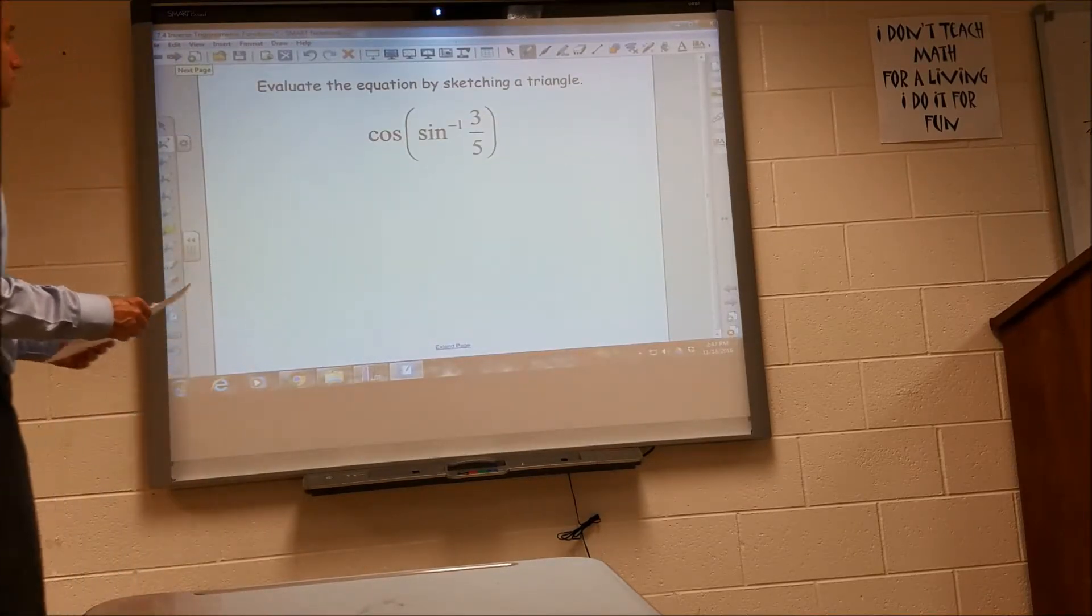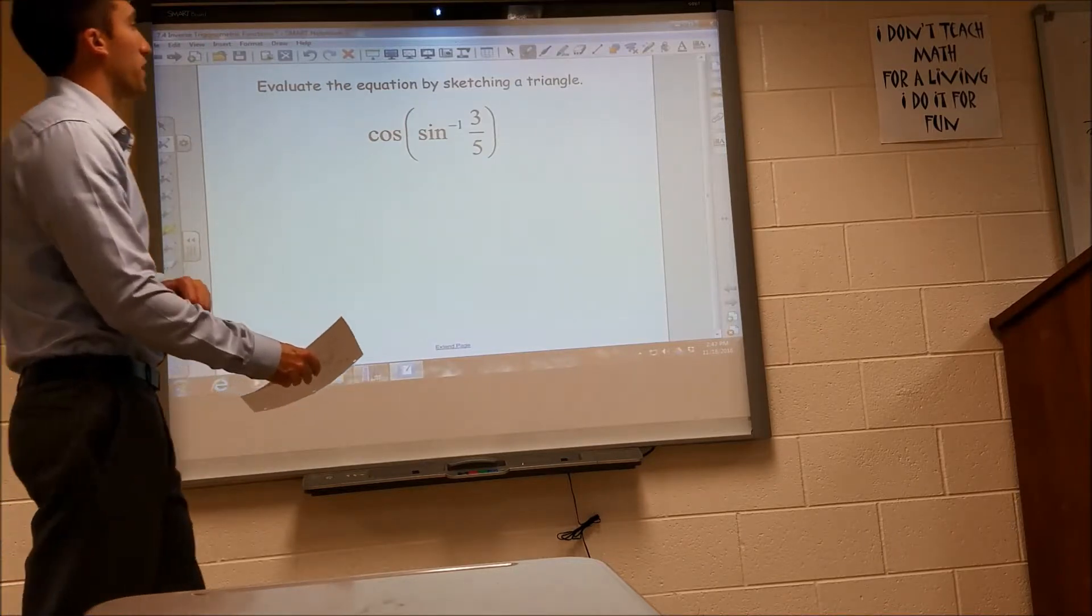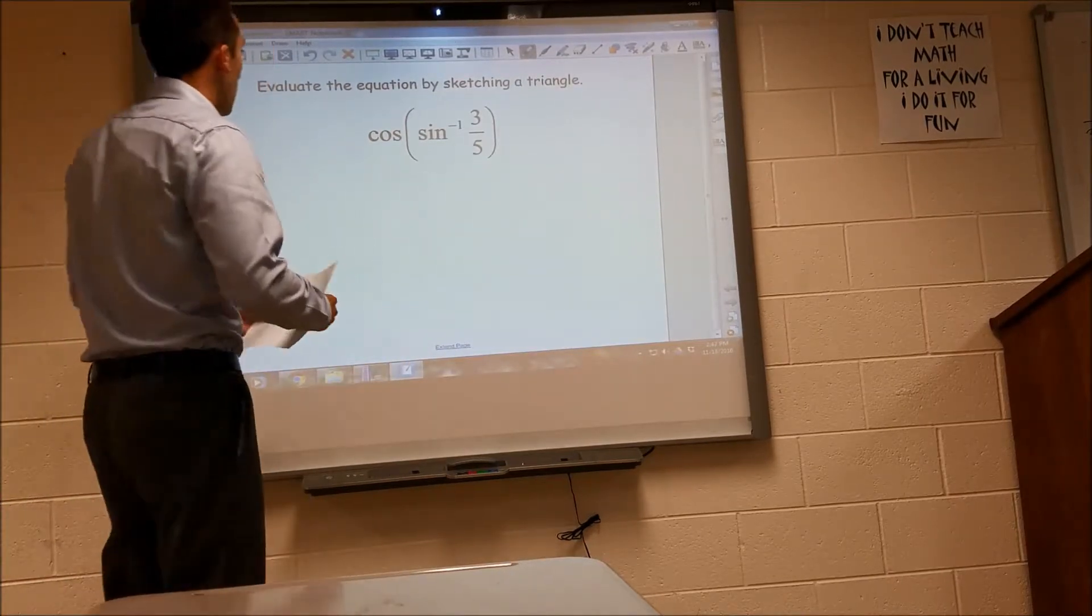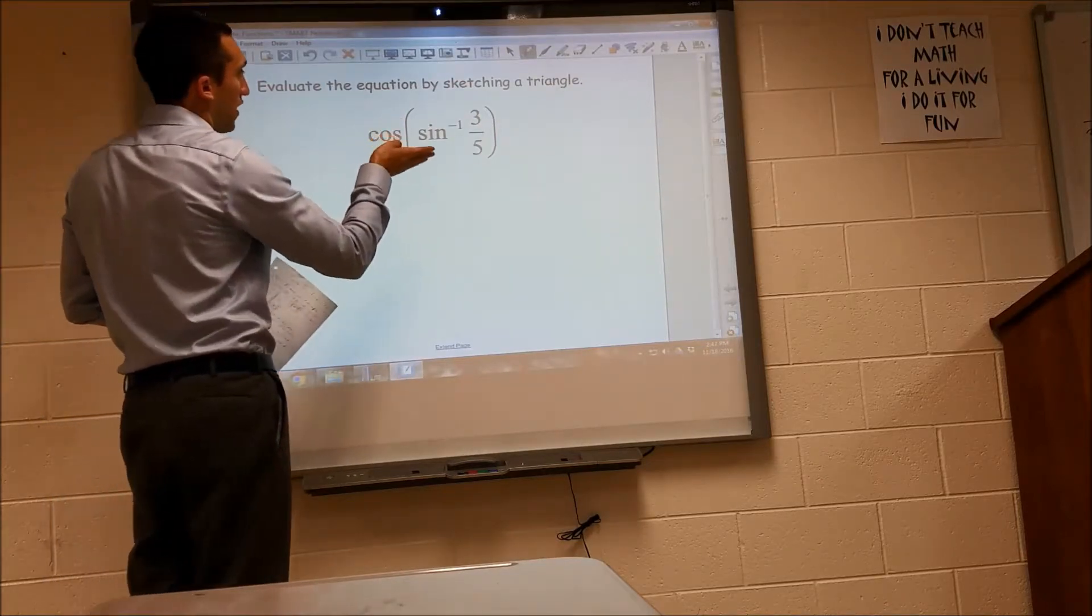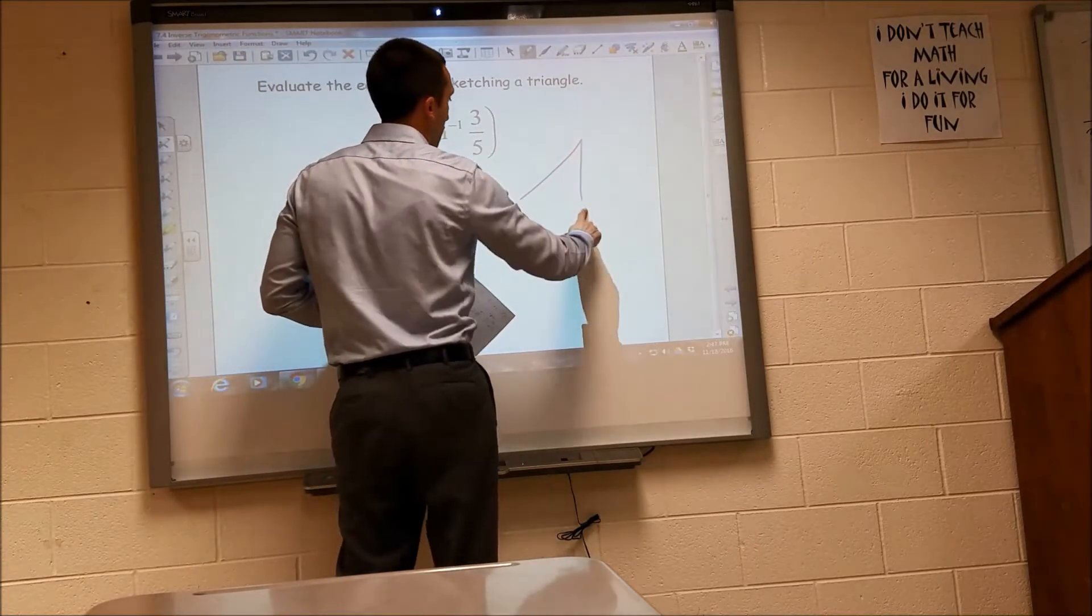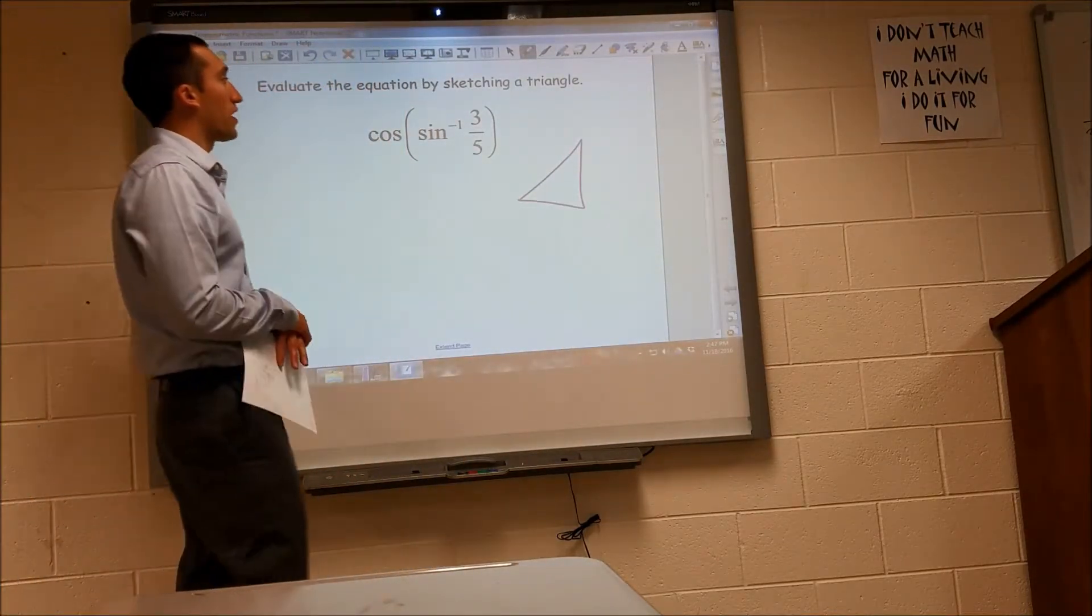And finally, they want us to evaluate, actually I have two more just like this, evaluate this equation by sketching a triangle. So I'm going to sketch a triangle. Since we have a positive sine value, I'm assuming it's in the first quadrant. And sine is opposite over hypotenuse.